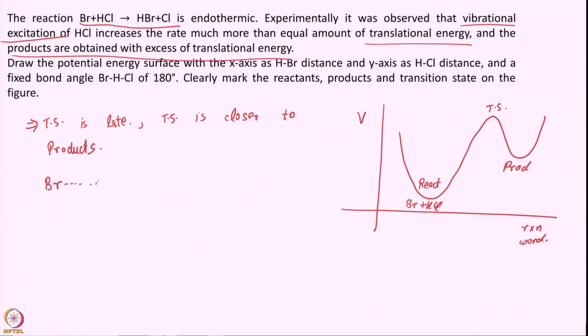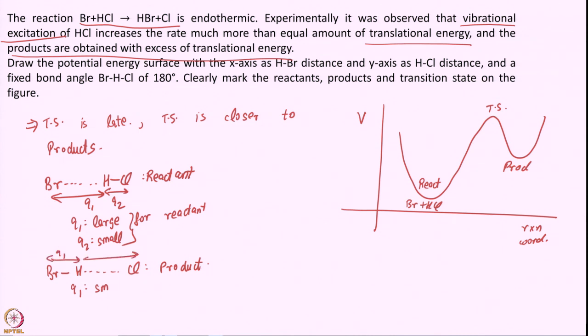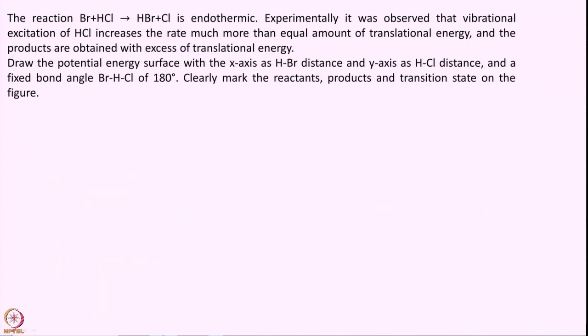Our reactant looks like this. What do I gain from this? Q1 large for reactant and Q2 is small at reactant. My product looks like this, where you have HBr and Cl is far separated away. So here Q1 is small, this is Q1, this is Q2, and Q2 is large. So for my reactant, I will have large Q1 and small Q2 and the opposite for product.